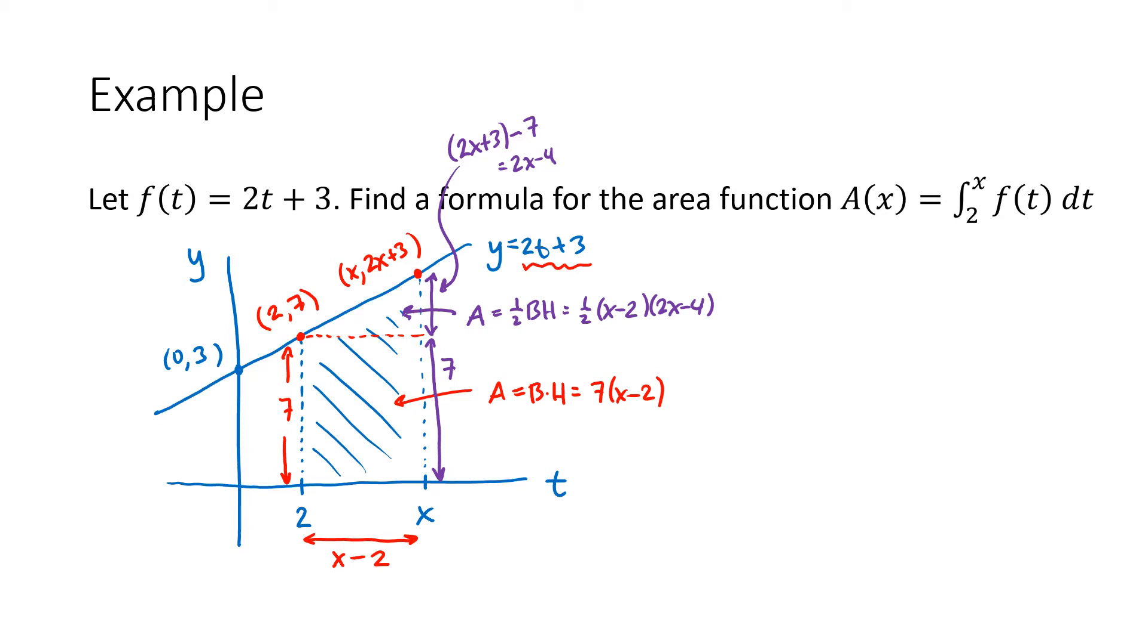So now our area would be, we don't have to simplify this. Nothing in the problem tells us to. So the area would be the area of the rectangle, 7 times x minus 2, plus the area 1 half times x minus 2 times 2x minus 4. But I actually do want to simplify this because I want us to notice something.